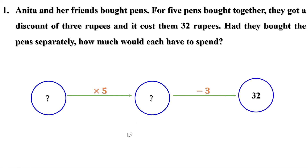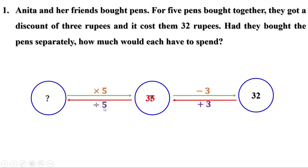To get the actual price of a pen, let us come back from this point. 3 is subtracted and we reached 32, so add 3 to get 35. This is the actual price of 5 pens — multiplying the price of one pen by 5 gives 35. To get the price of a pen, divide 35 by 5 and we get 7. The actual price of a pen is 7 rupees.